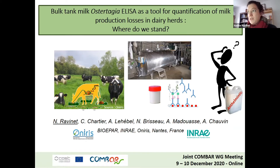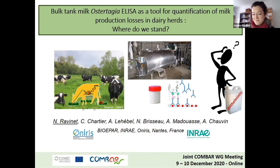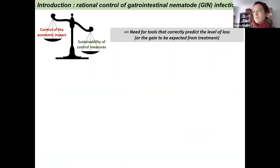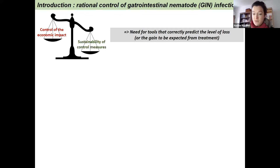So the question is: where do we stand? This presentation is totally different from those regarding molecular markers. To rationally control gastrointestinal nematode infection, we want to make sure that we do not treat for nothing. So there is an important need for tools that correctly predict the level of loss or the gain to be expected from treatment.